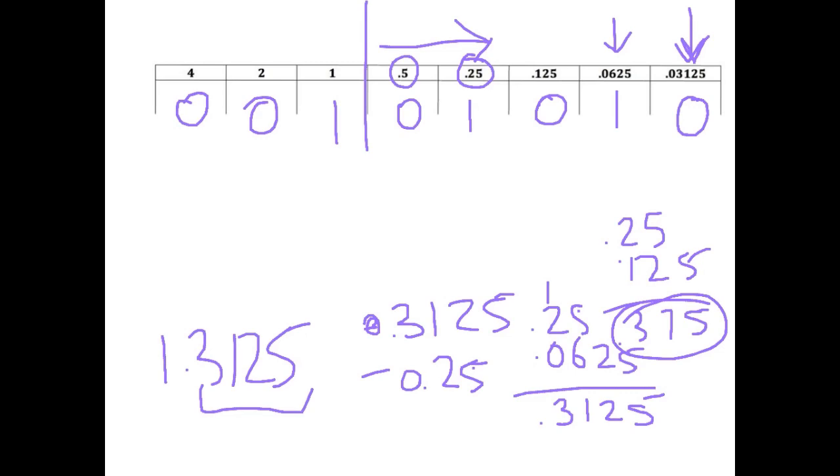So using this procedure you can figure out what the fractional part is of pretty much any number. Now if they don't look like they fit easily into this scale, there is another approach to figuring out the fractional part and we'll have a look at that now. So let's say we had the number 0.4. Now that doesn't look like it easily fits into a 0.5 or a 0.25 or a 0.125. So we're going to take this other approach.